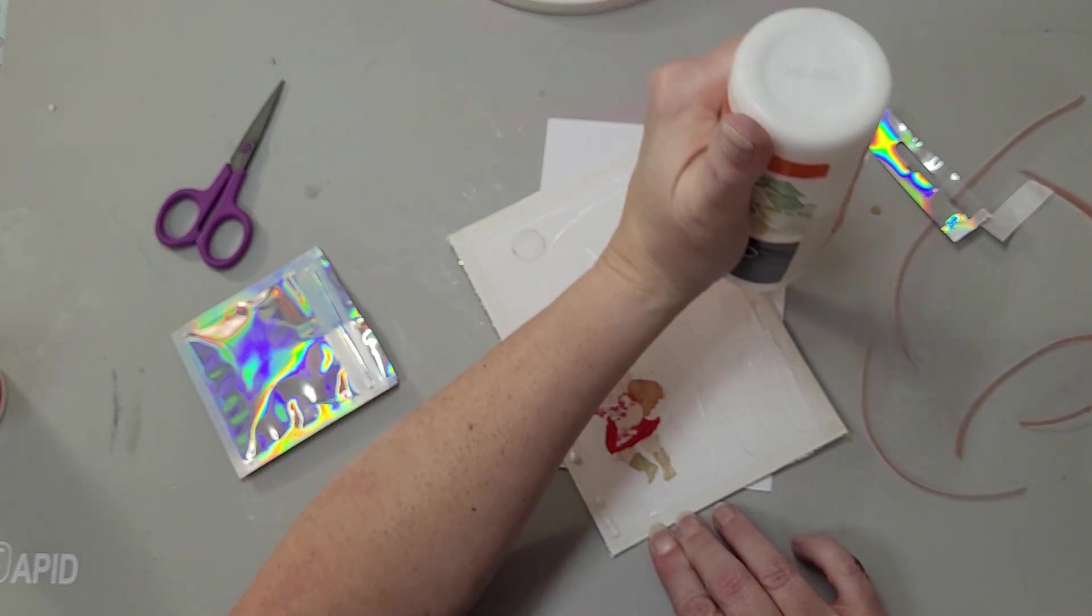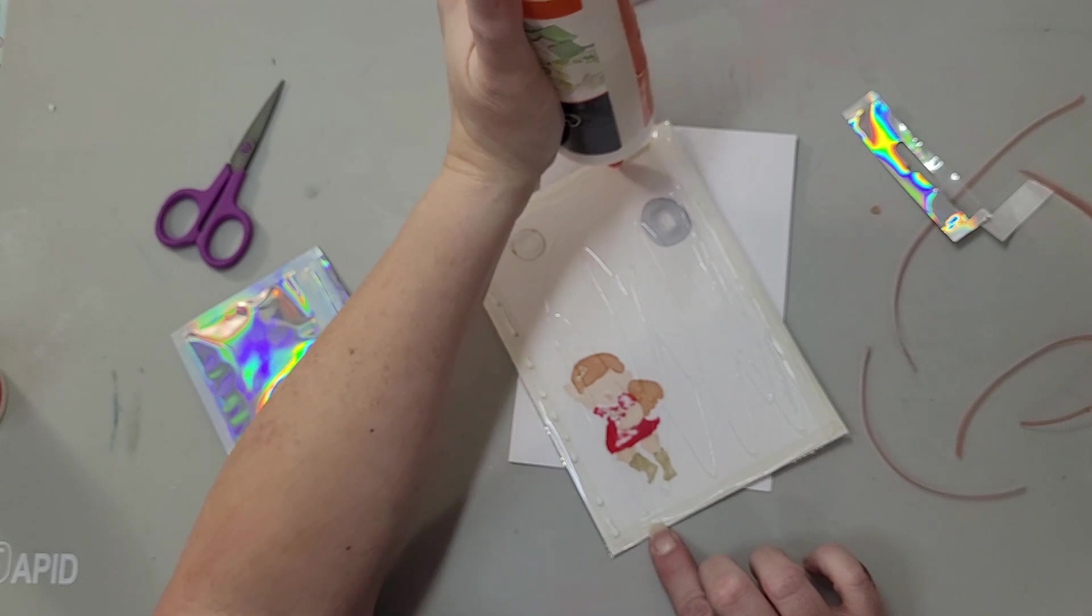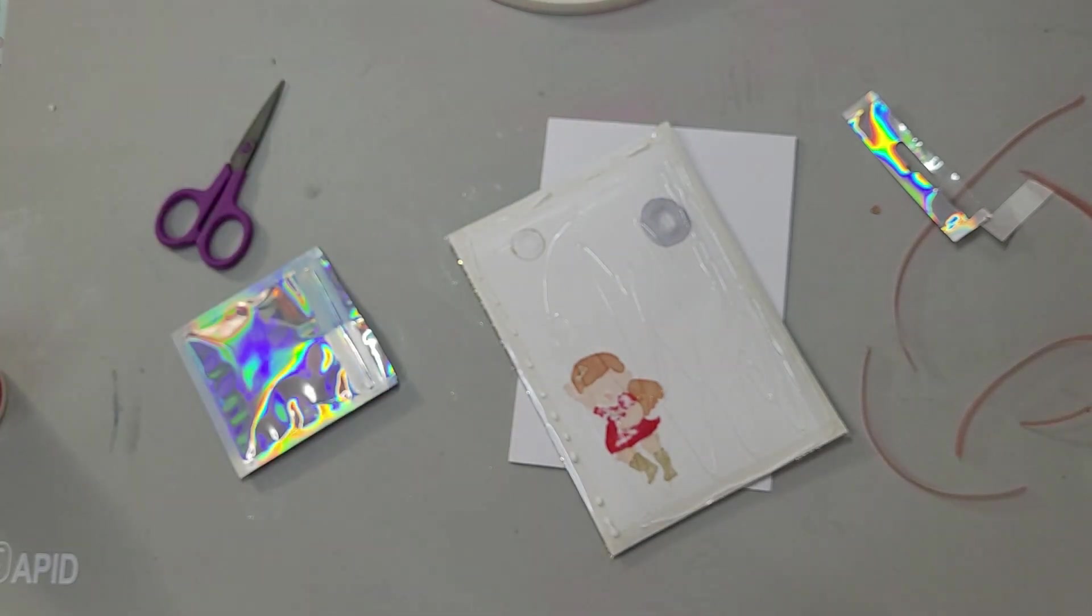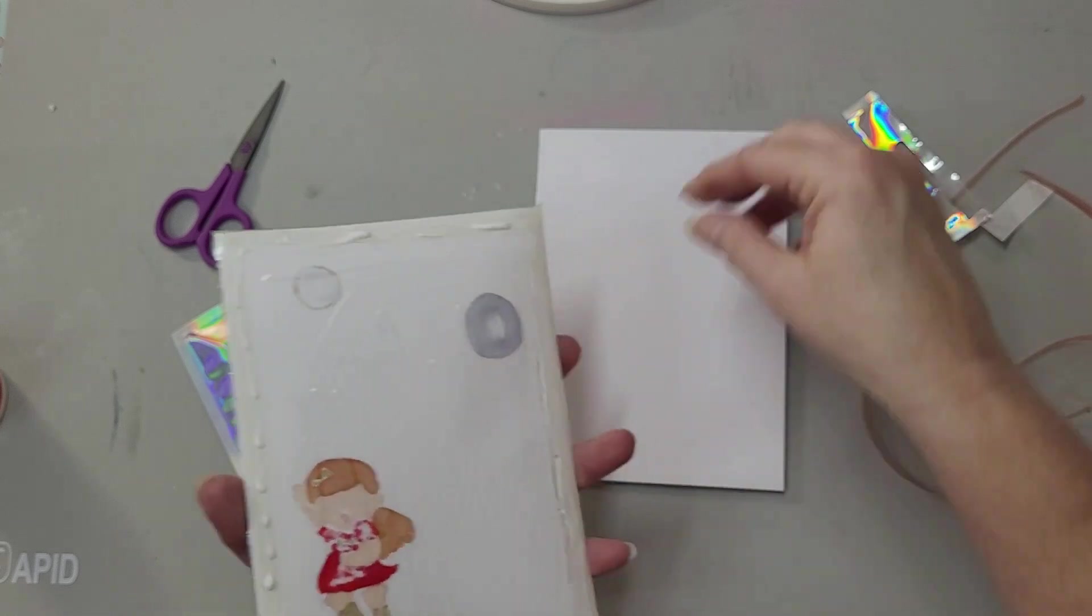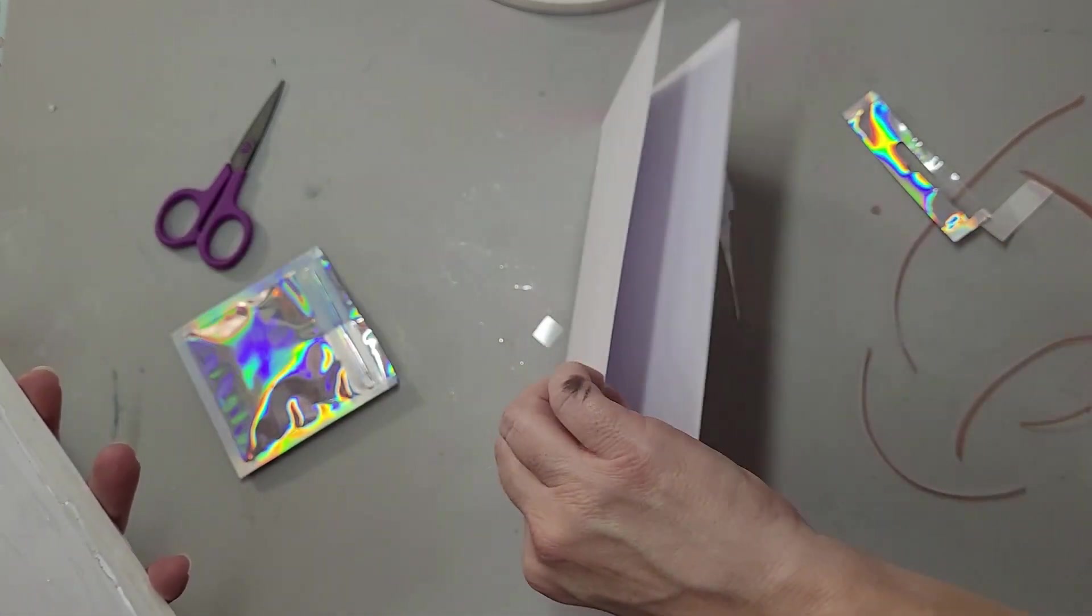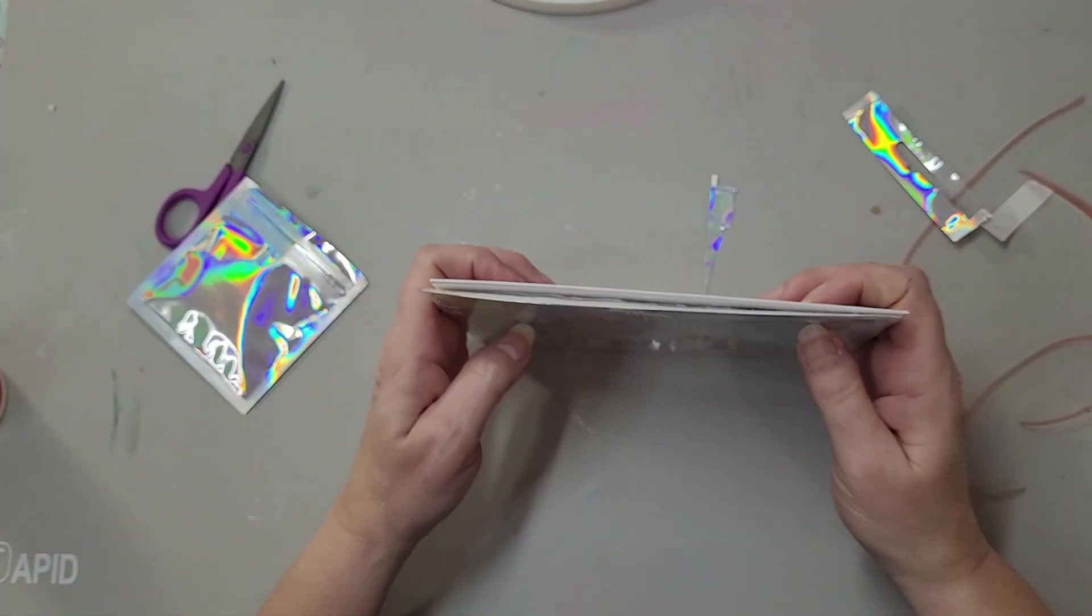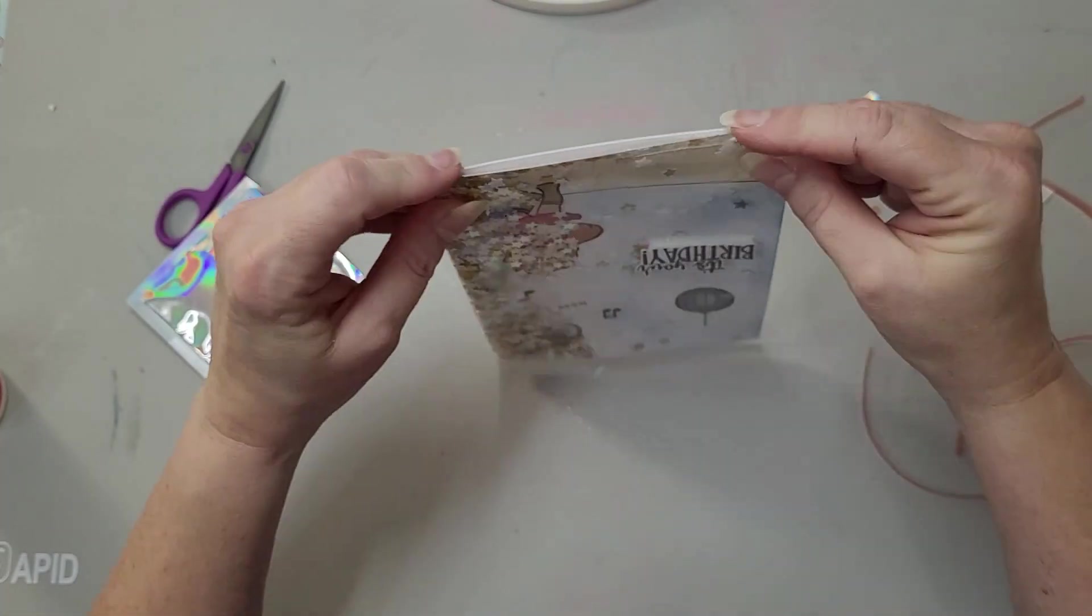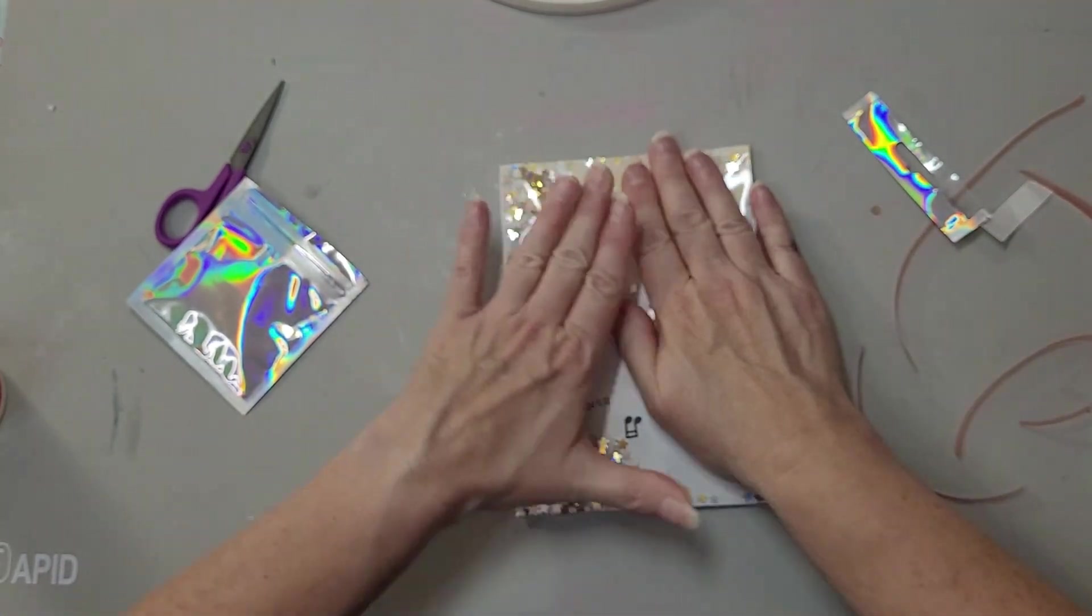And I am going to put some tacky glue along the edge here just so I can get a better grip on the acetate, on the edge there. Make sure I'm not putting this on upside down. Put this on the front and press down.